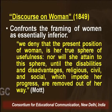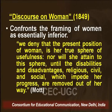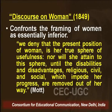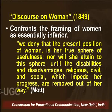The text was written in 1849, which situates it in the heart of the 19th century. In this essay or speech, Mott confronts the framing of women as essentially inferior. She goes over the existing arguments — in religion and in society — and from there she questions that framing, very strongly and boldly opposing this stance.